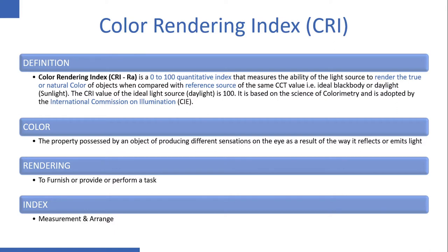Before starting with color rendering index, we should understand three words. First, color — color is the property of an object to produce different sensations on the eye as a result of the way it reflects or emits light. For example, grass absorbs all other light and reflects green light, which is why it appears green. Second, rendering means to furnish or perform a task. Third, index means a measurement or arrangement. Now the definition: CRI is a 0 to 100 quantitative index